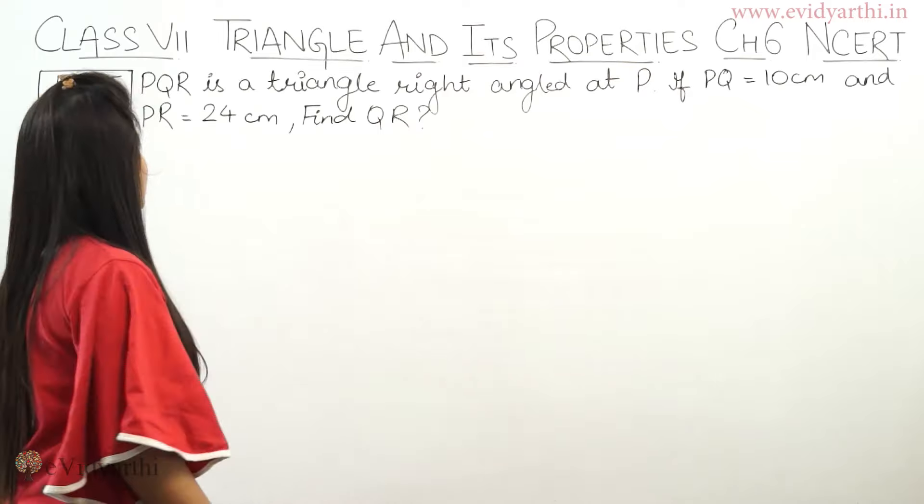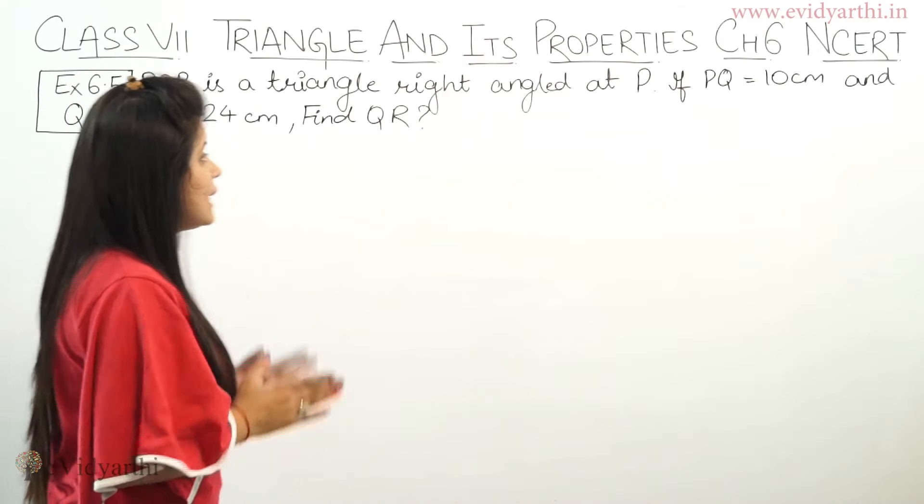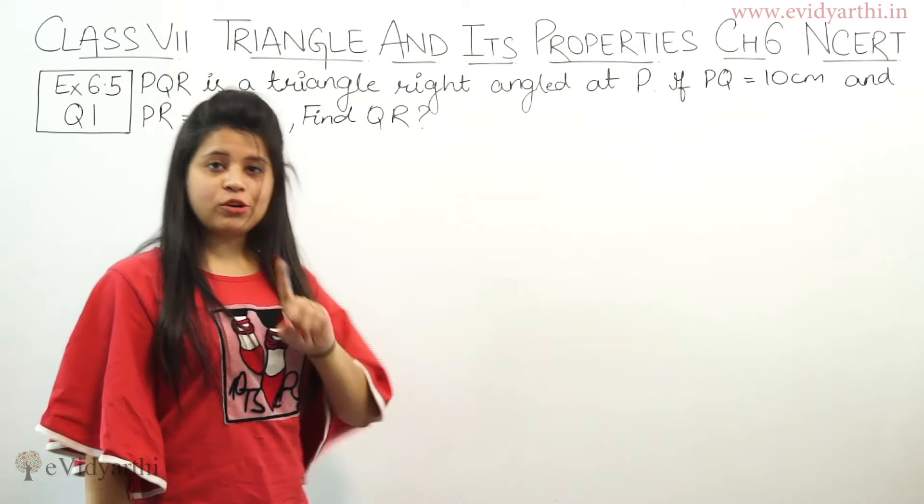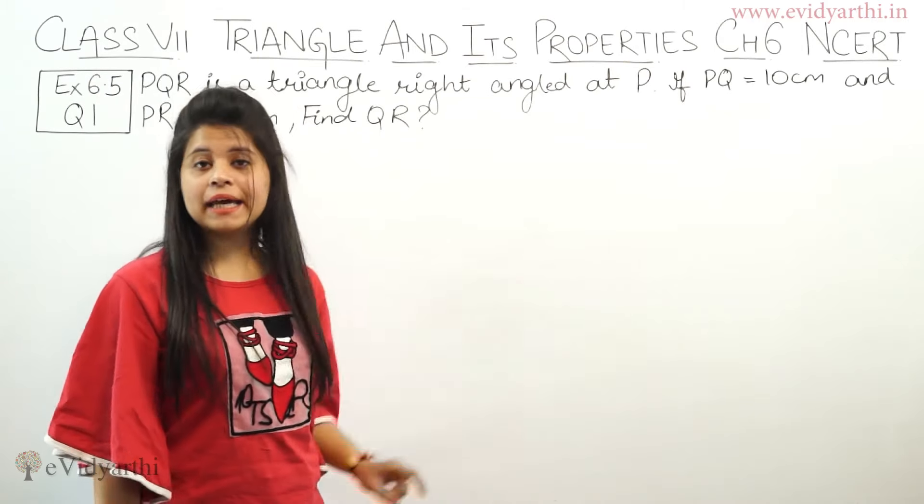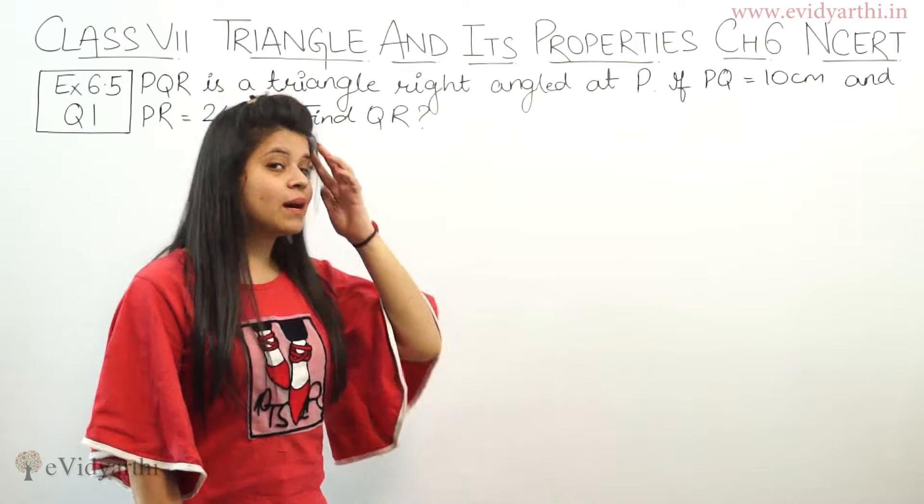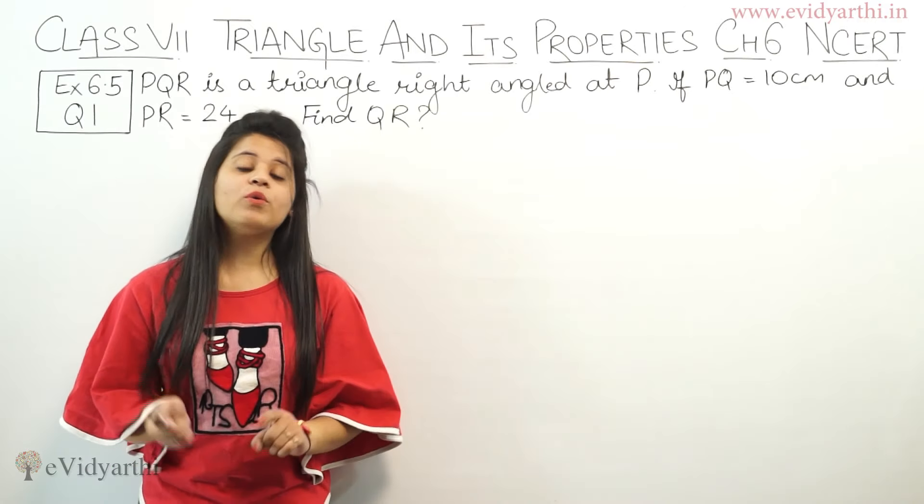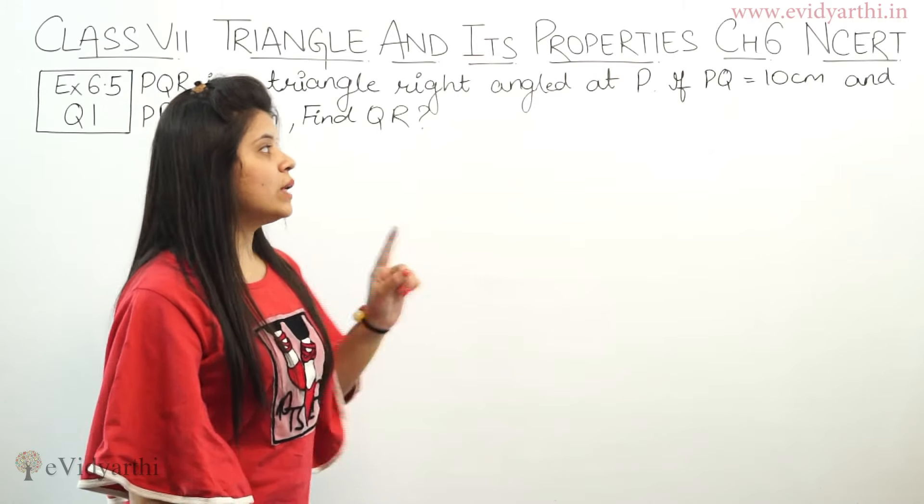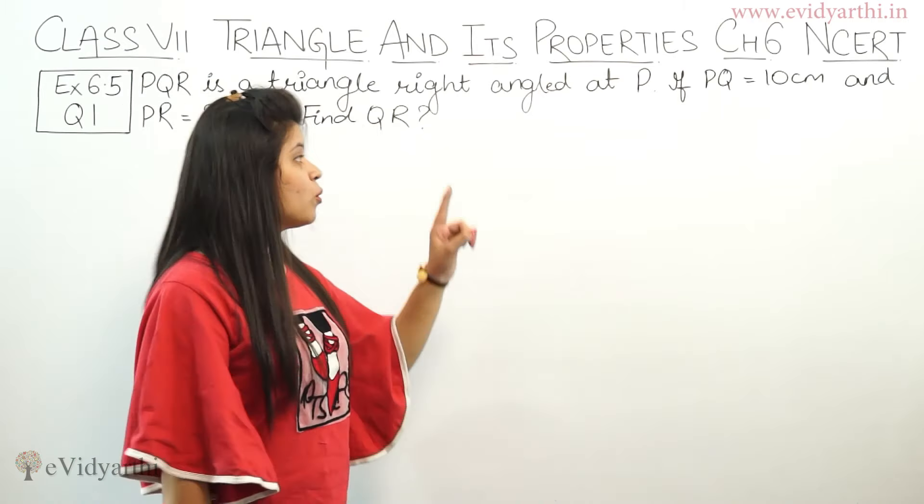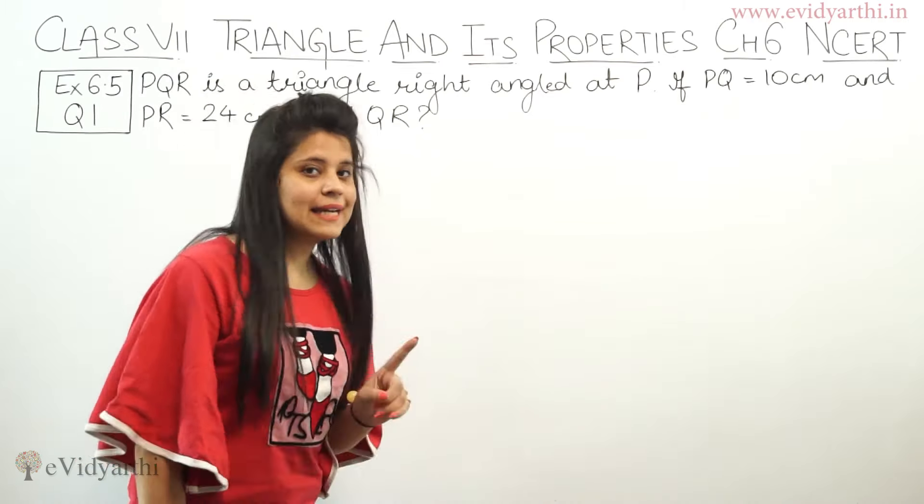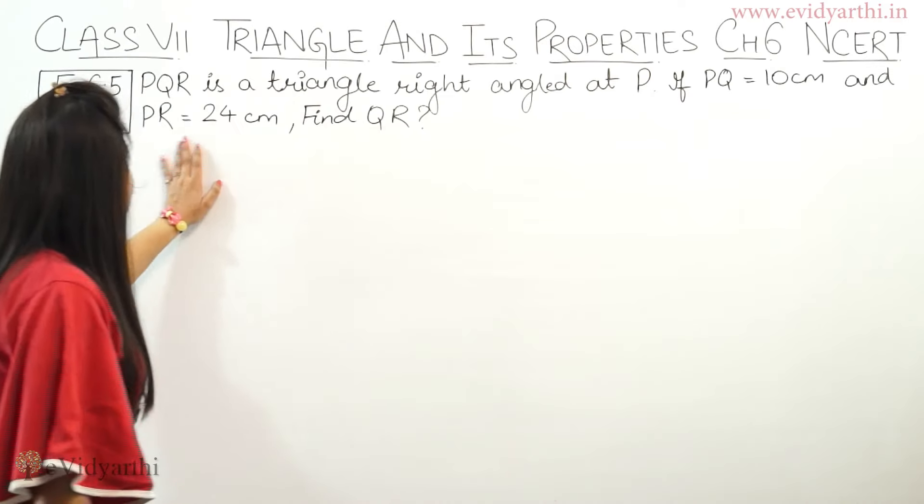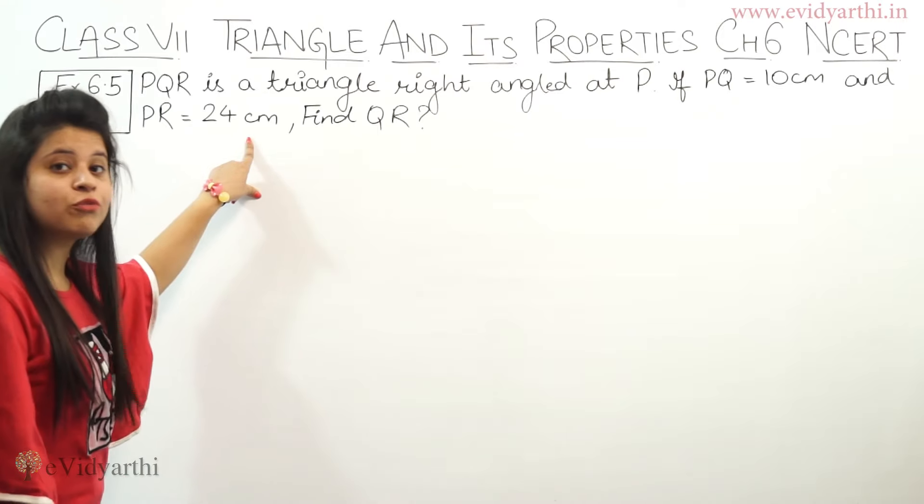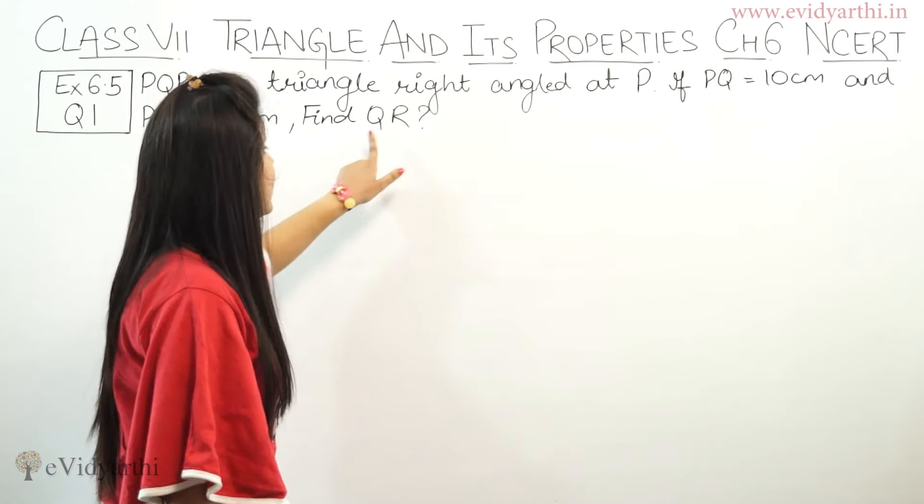So, PQR is a triangle right angled at P. If PQR is a triangle which is right angled at P, right angle at P means 90 degree angle is at P. Now, if PQ equals 10 cm and PR equals 24 cm, find QR.